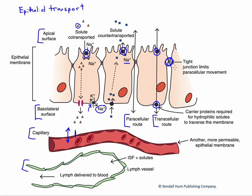Finally, we can have movement across this epithelium that is not energy dependent, outside of the gradient of the substance itself. That is called facilitated diffusion, where the carrier protein is simply allowing a polar substance to cross the membrane, but allowing it to move down its concentration gradient. Therefore, we don't need the input of ATP or the dissipation of something like a sodium gradient — no additional energy source is required.